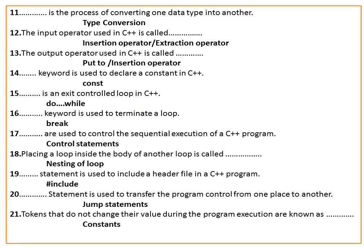The keyword used to declare a constant in C++ is CONST. An exit controlled loop in C++ is the Do-While loop. The keyword used to terminate a loop is break. Jump statements are used to control the sequence of execution of a C++ program. Tokens that do not change their value during program execution are called constants.